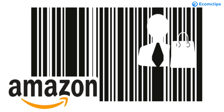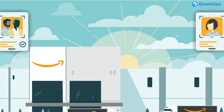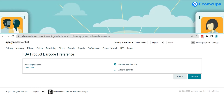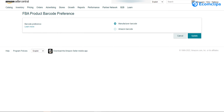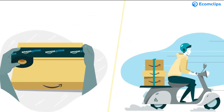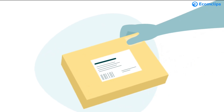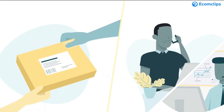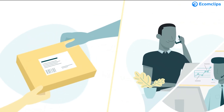You may have a question about what Amazon barcode enabled means. On Amazon, you can set your barcode preferences under settings in Amazon Seller Central. Before Amazon can make your inventory active, each unit must be labeled with the FNSKU barcode.